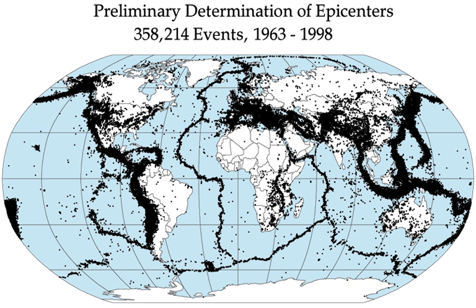Sometimes a series of earthquakes occur in what has been called an earthquake storm, where earthquakes strike a fault in clusters, each triggered by the shaking or stress redistribution of previous earthquakes. Similar to aftershocks but on adjacent segments of fault, these storms occur over the course of years. Such a pattern was observed in a sequence of about a dozen earthquakes that struck the North Anatolian Fault in Turkey in the 20th century and has been inferred for older clusters of large earthquakes in the Middle East.